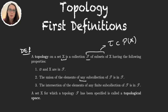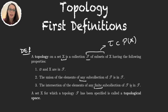The last property, where we do have one restriction, is that the intersection of the elements of any finite subcollection of tau is in tau. So basically: the empty set and the whole set are in the topology; we have arbitrary unions of sets; and we have finite intersections.